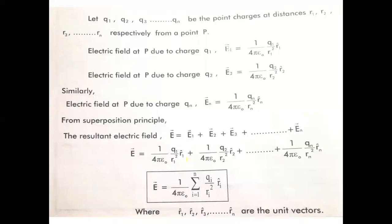Let Q1, Q2, Q3 and so on up to QN be the point charges at distances R1, R2, and R3 respectively from a point P. I will consider the system of N point charges already mentioned. So Q1, Q2, Q3 and so on up to QN are the point charges at distances R1, R2, R3 respectively from point P.